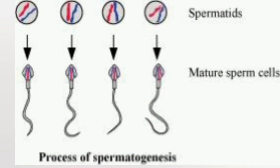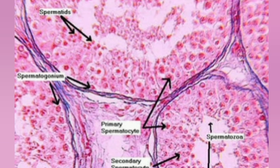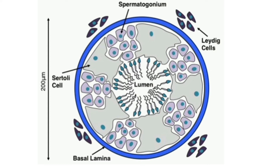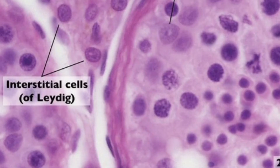The mature sperms are present in the center and primary spermatocytes in the middle layer. The Sertoli cells are prominent pyramid-shaped cells found in between the germinal cells. These cells provide nutrition to the developing spermatozoa.